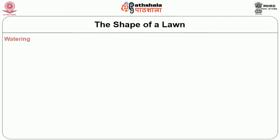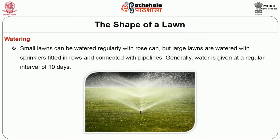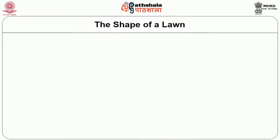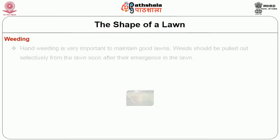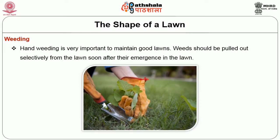The next is watering. Small lawns can be watered regularly with a rose can. Large lawns are watered with sprinklers, fitted in rows and connected with pipelines. Generally, water is given at a regular interval of 10 days. Then weeding: hand weeding is very important to maintain good lawns. Weeds should be pulled out selectively from the lawn soon after their emergence.